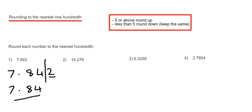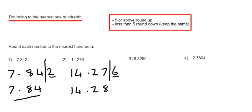So let's move on to example 2. This time we have 14.276. Again, we put a line in two numbers after the decimal point. We've got two choices: we can either round the number down to 14.27 or round the number up to 14.28. Since the number after the line is 5 or above, that means we round our number up to 14.28.